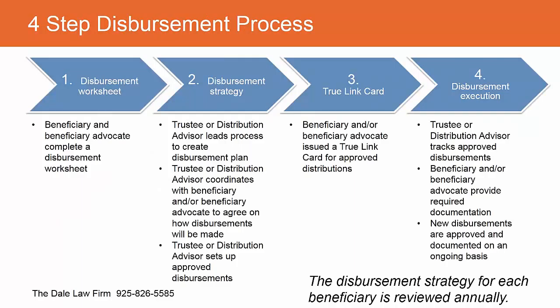Here's a four-part distribution process to keep in mind as we walk through the process and have Julia talk about the tool that can assist. The first part: the beneficiary or beneficiary advocate — a family member, friend, or care manager — completes a disbursement worksheet and submits it to the trustee or the trustee distribution advisor.